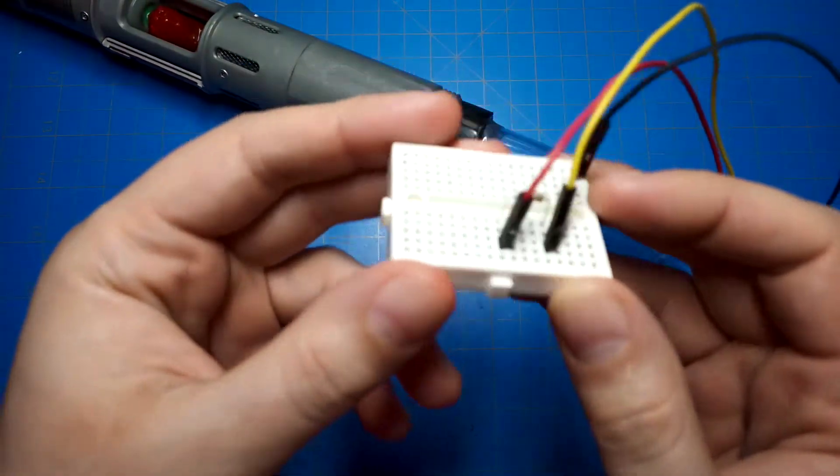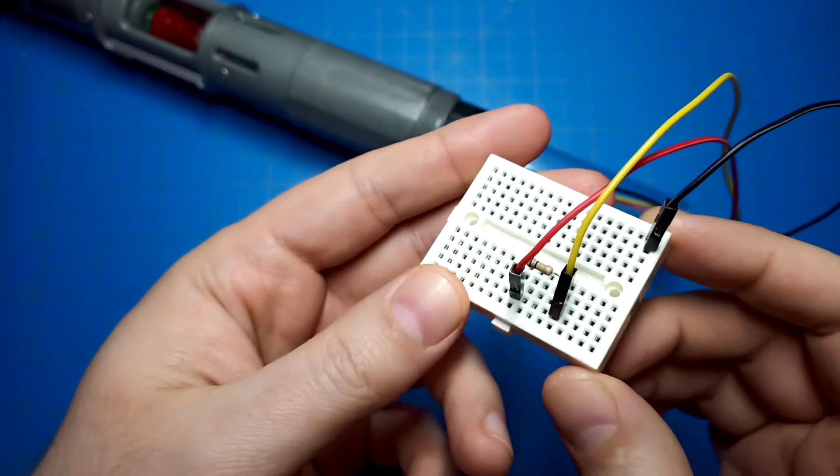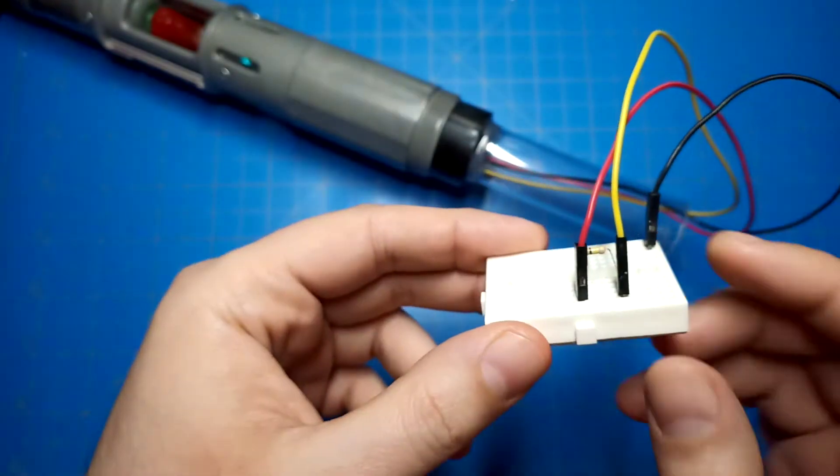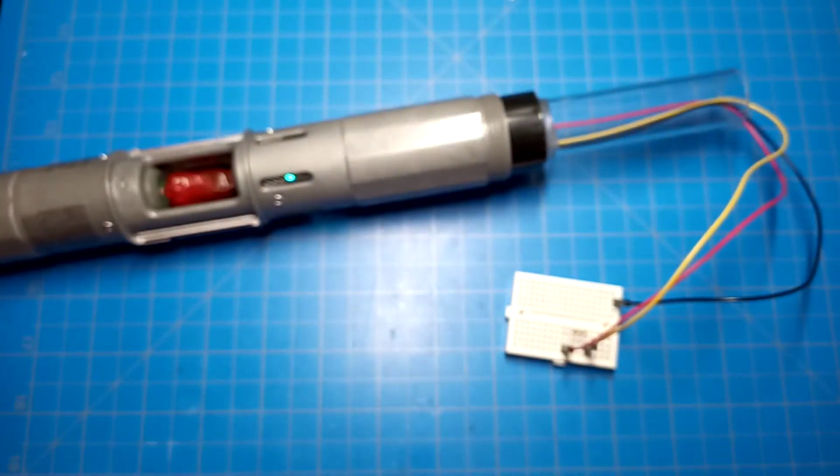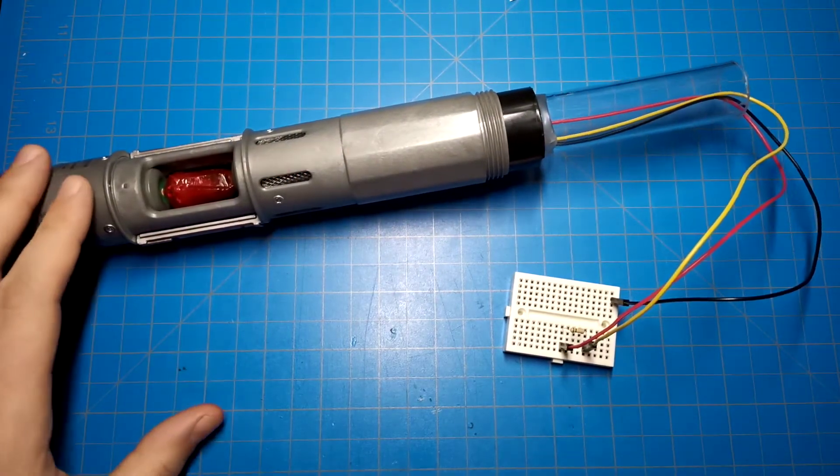And for the moment, for demonstration purposes on this breadboard, I have a 100,000 ohm resistor or 100k resistor. That's just to limit the current that's going through back into the microcontroller in here.